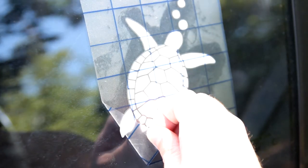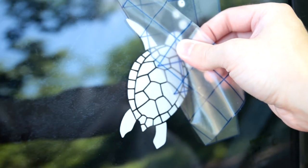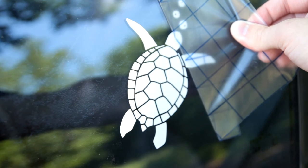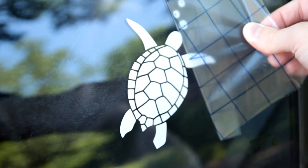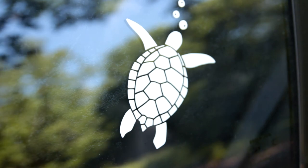Now just slowly pull up on the transfer paper. Take your time. If you notice that pieces are coming up, you can set it back down, apply some pressure, and then try again. But as you can see, my decal turned out great. It stayed on. It was actually really hard to get off after the video.